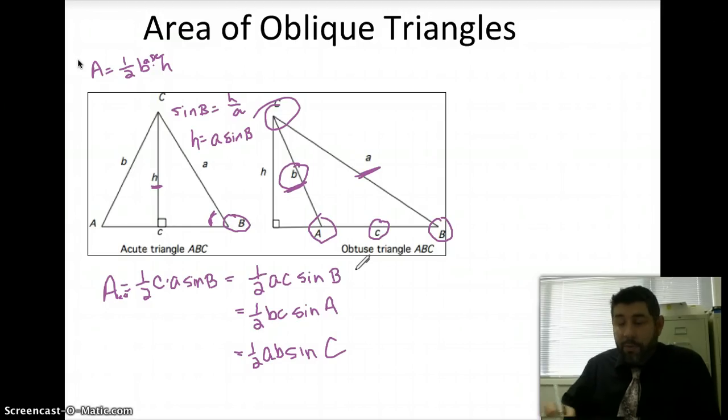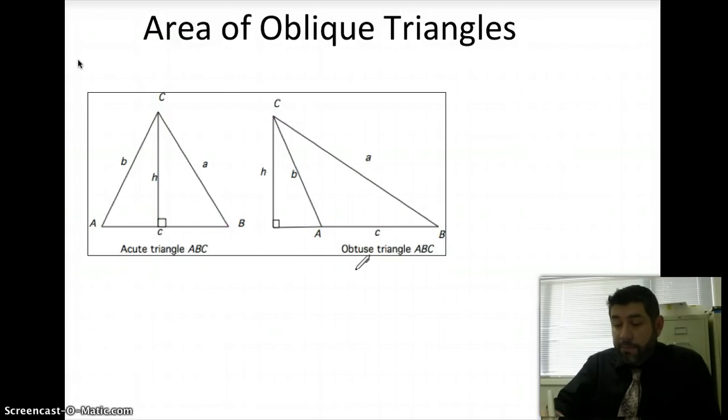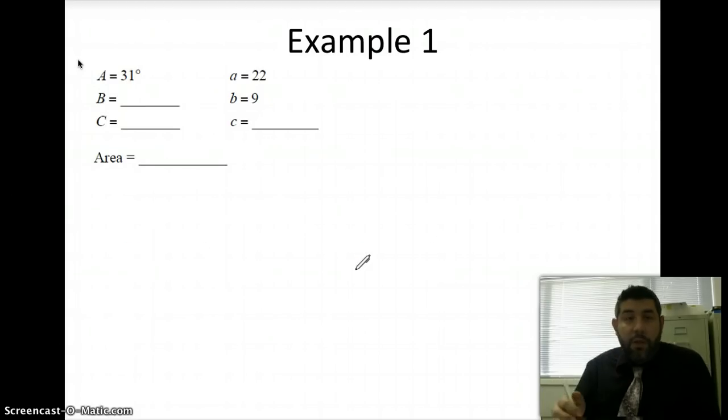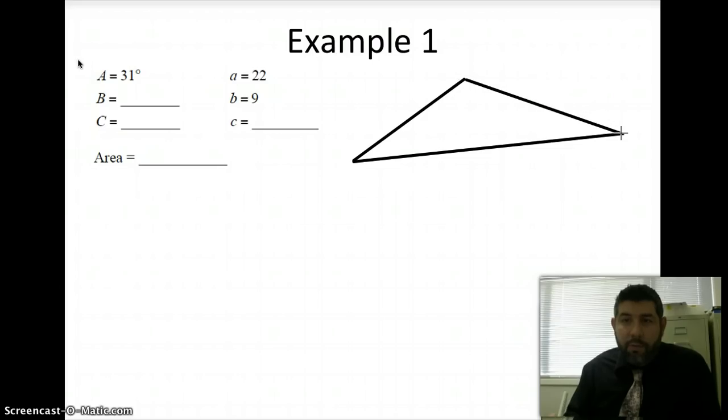So let's take a look at an example using this area formula. So we have this triangle, so I'm going to go ahead and make this. I'm going to do the best I can to make this triangle. So it's up here. Let's go ahead and make a triangle. It's about 31 degrees here. I mean, we're not going to say it's perfect, okay? So it's not going to be.